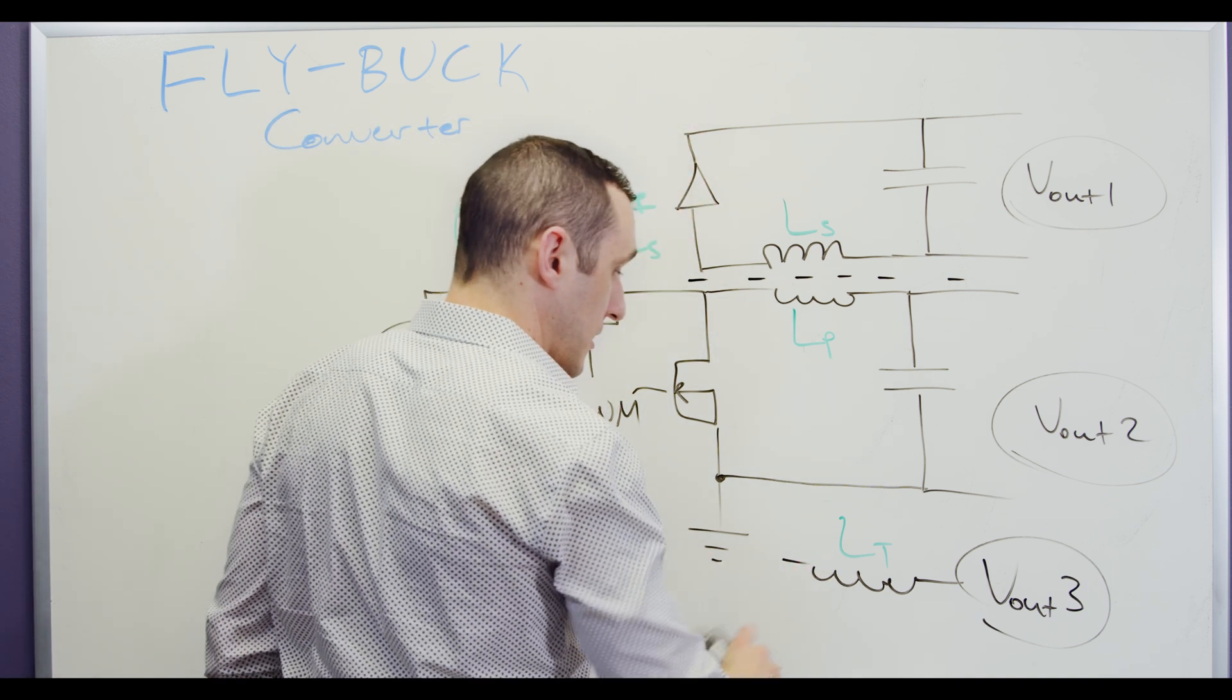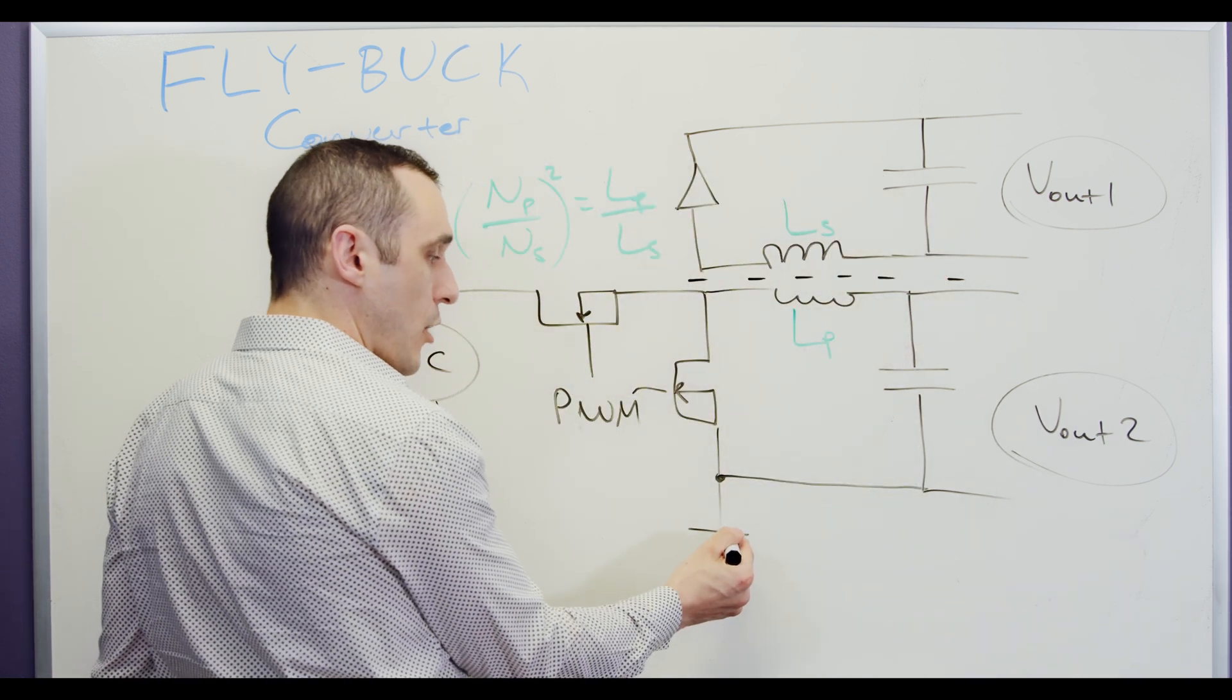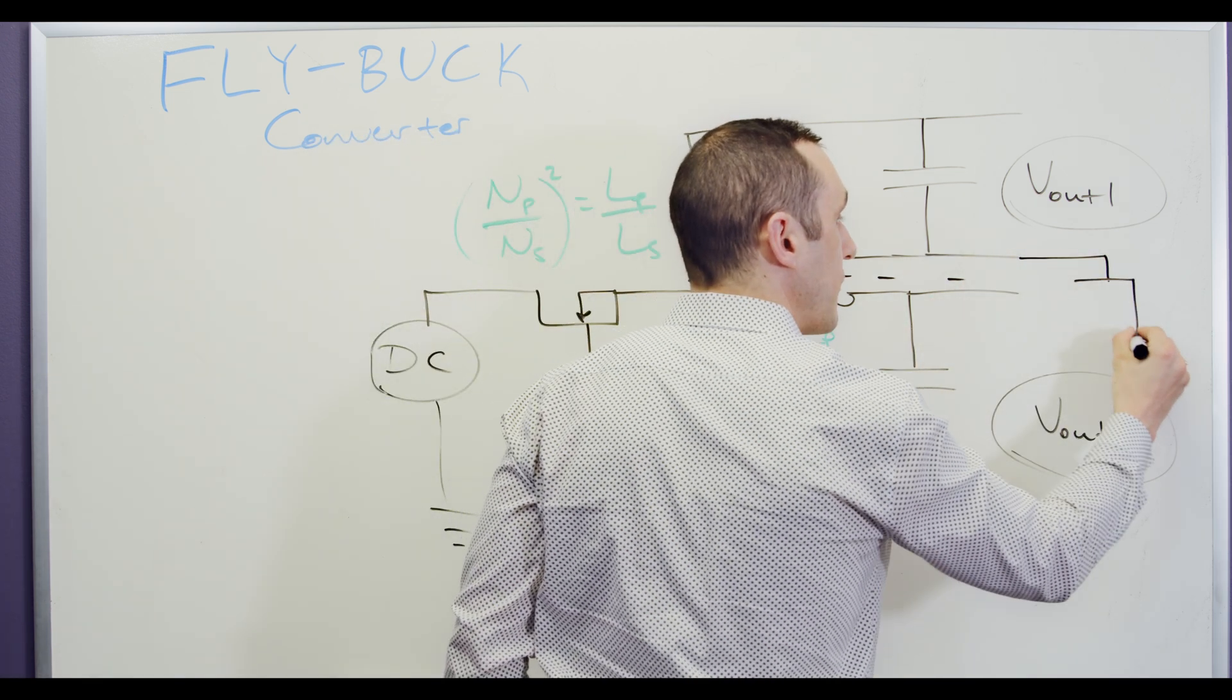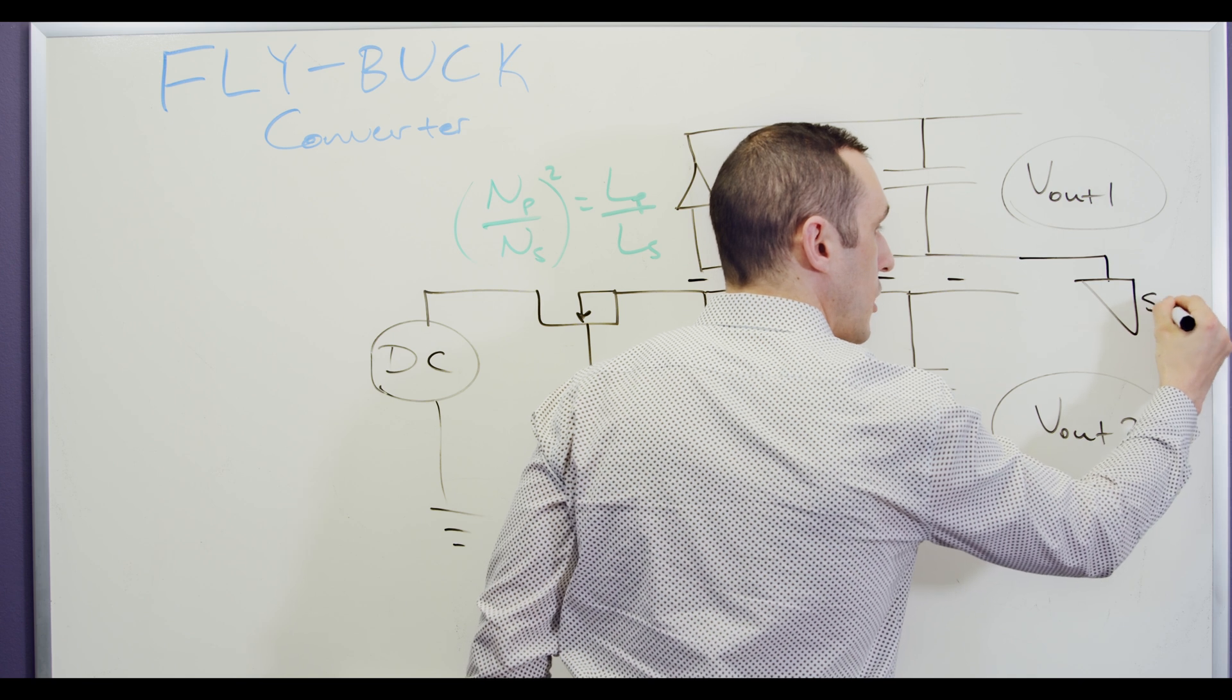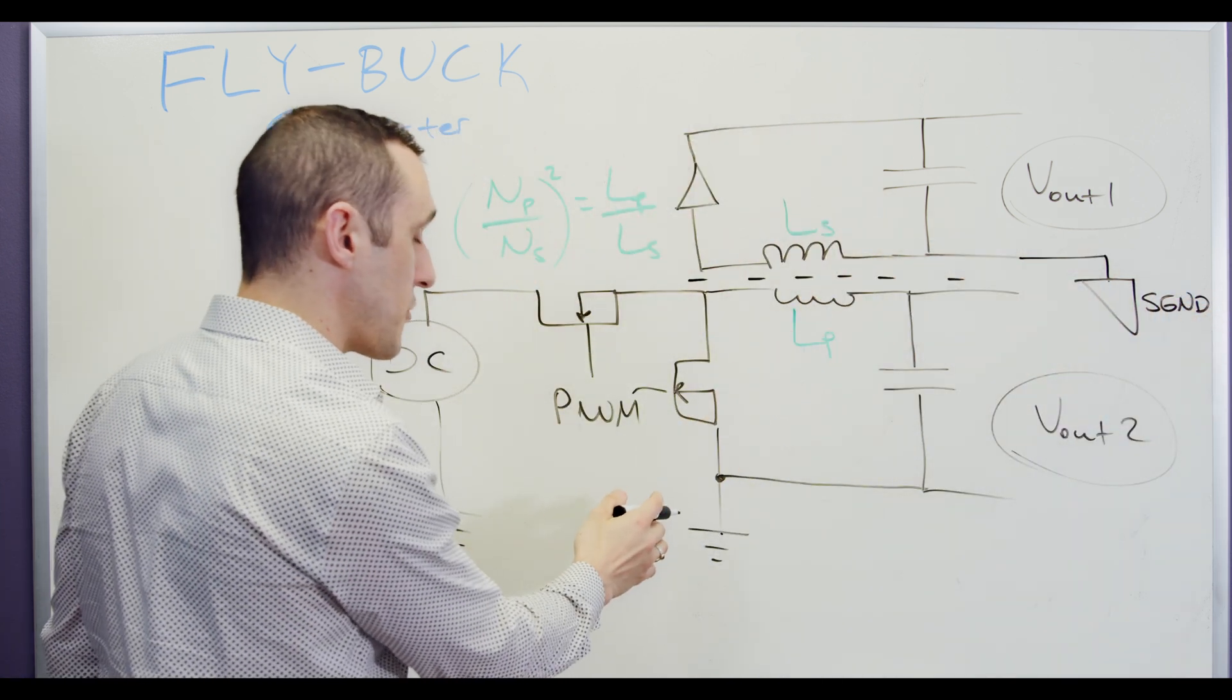So I could basically have, let's say in the case of two rails, I have here my main primary ground. But over here on this output, I could have a secondary ground. We'll call it SGND. That is galvanically isolated from this first ground.